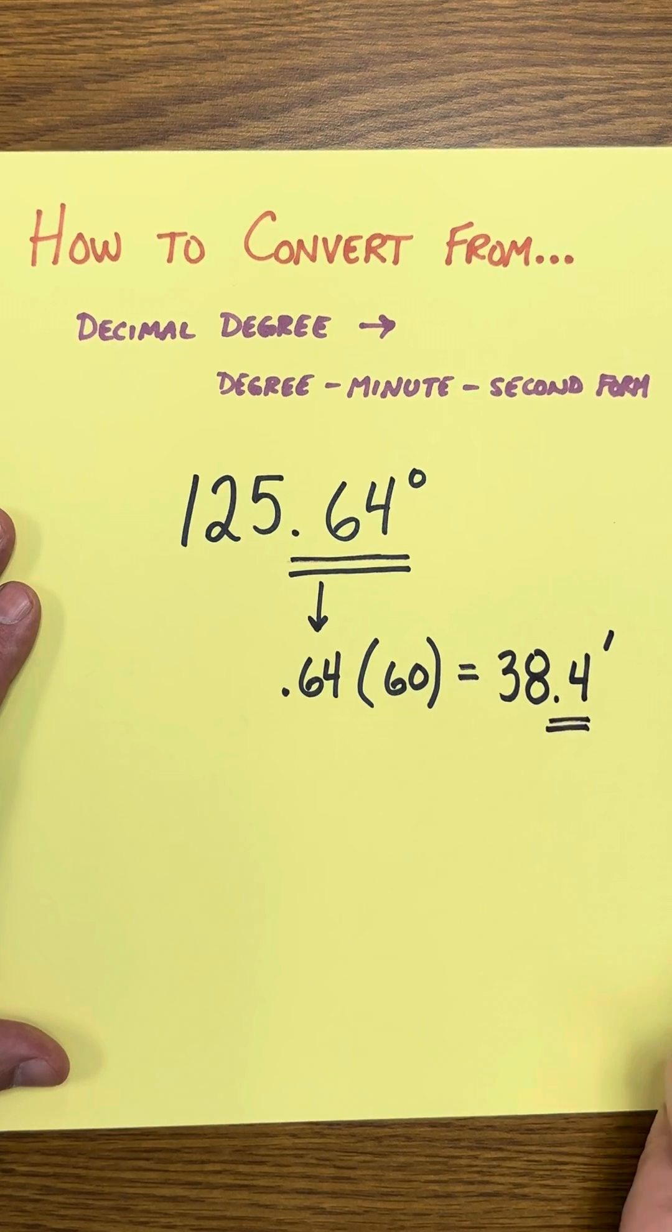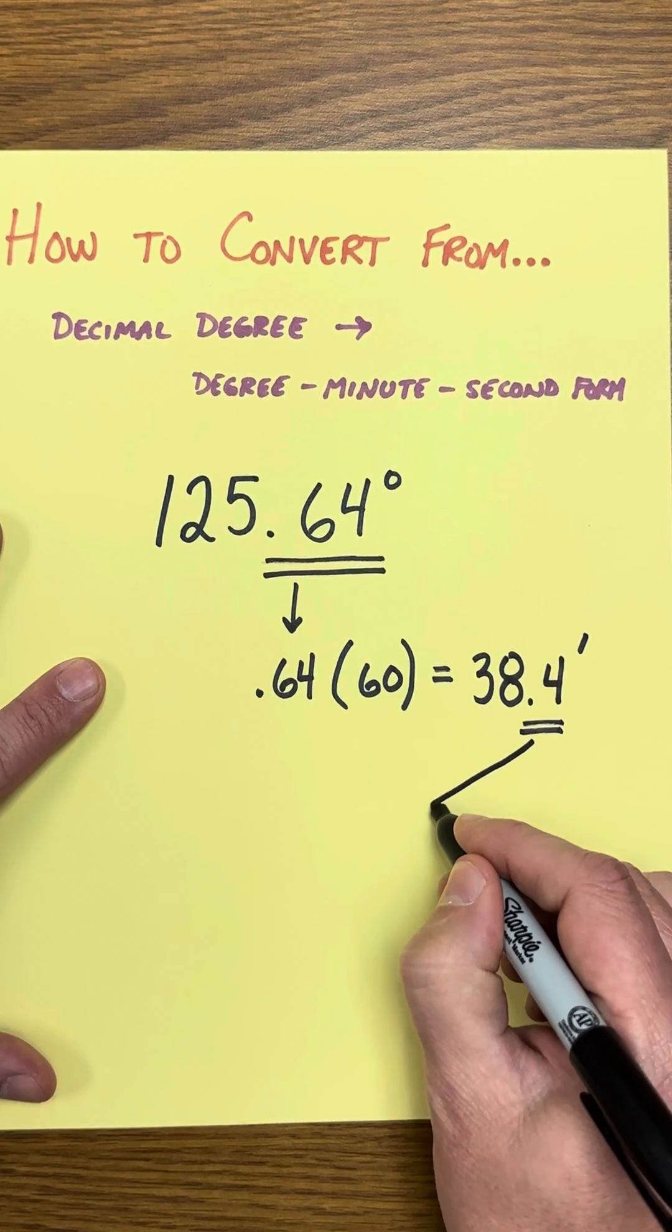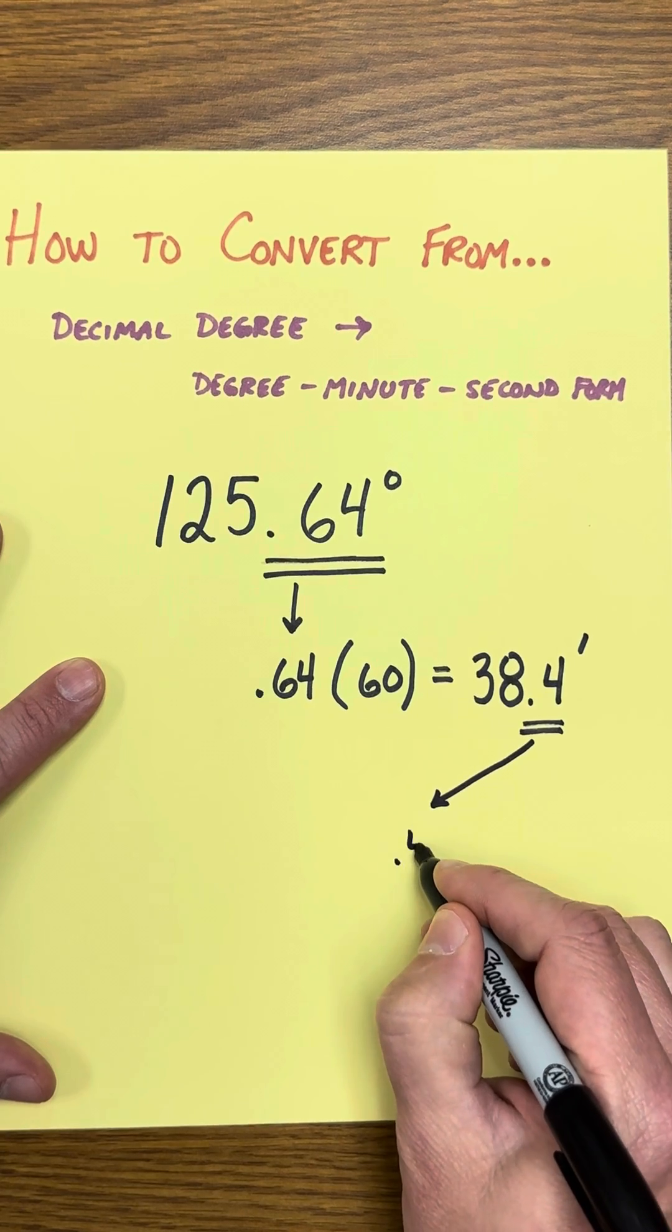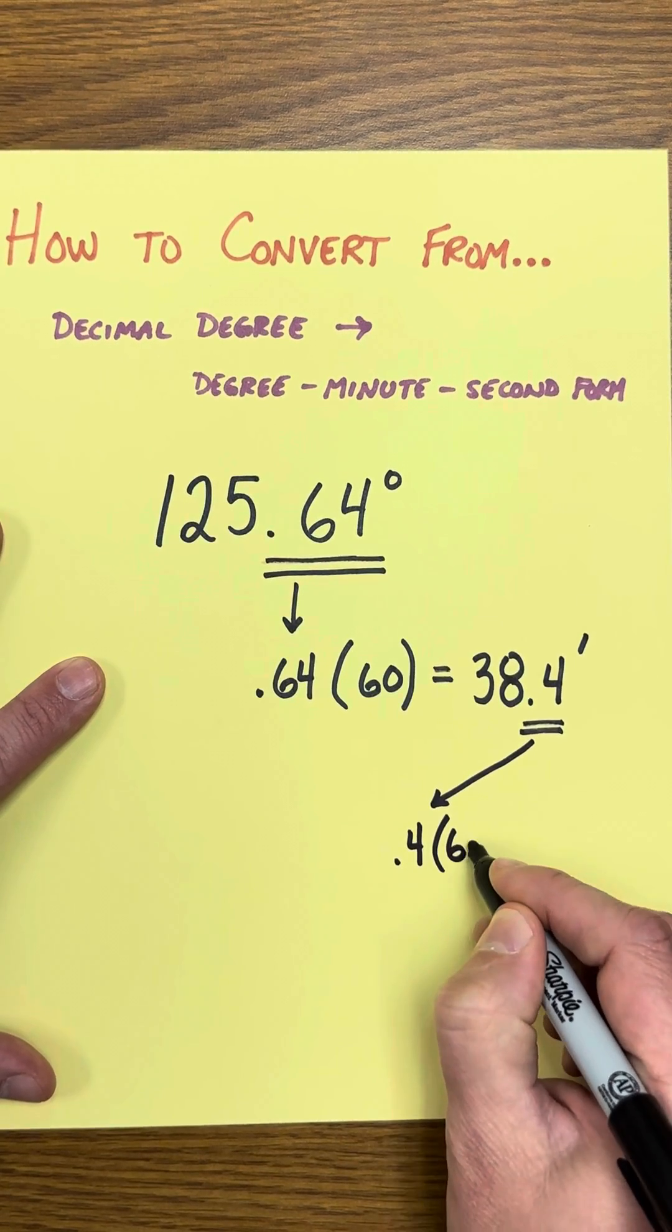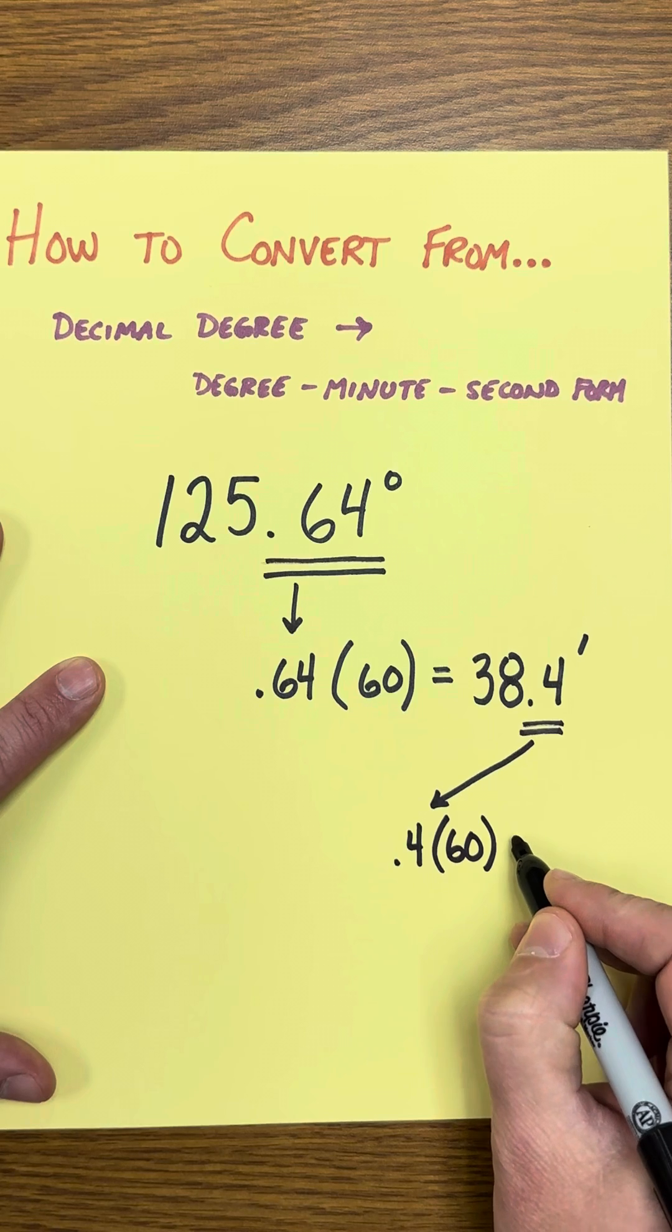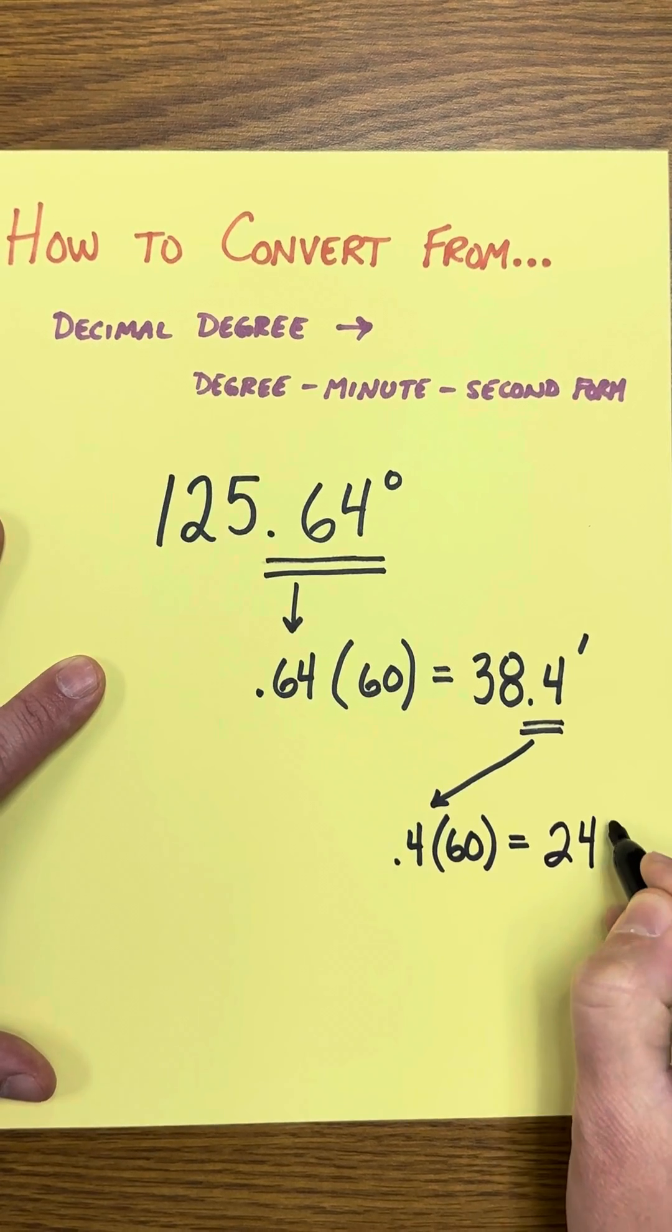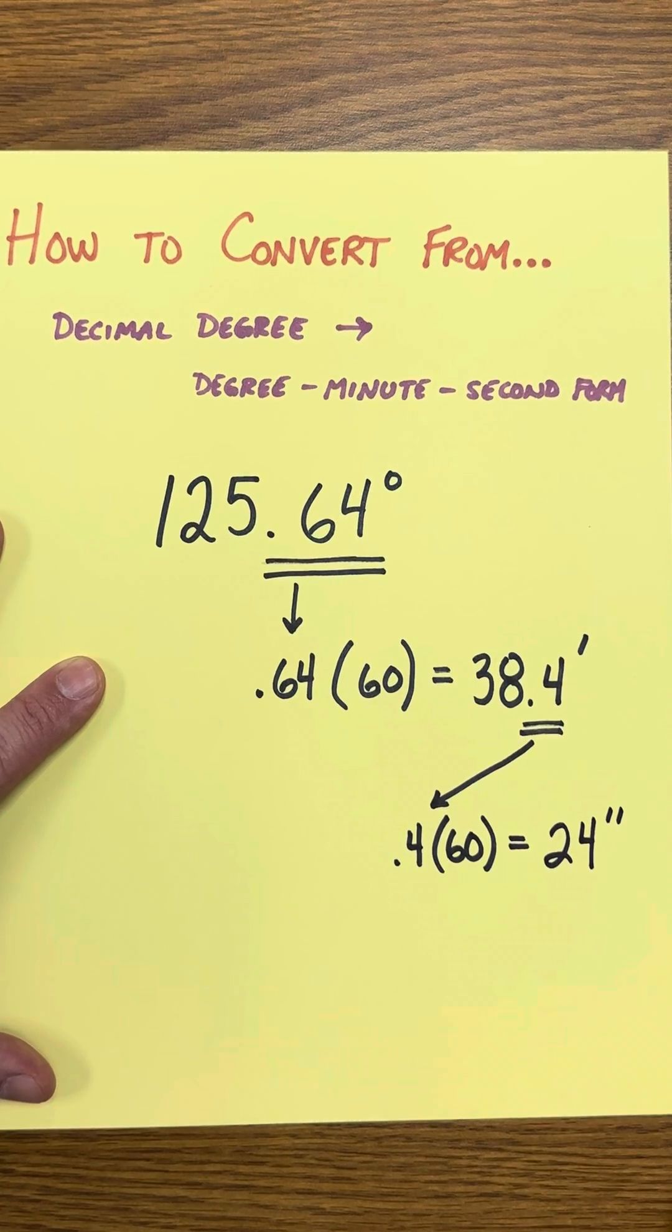So I'm going to convert that 0.4 into seconds. Again, just using the decimal, we're going to take 0.4 times 60 and use your calculator if you need. 0.4 times 60 is 24. That's going to be 24 seconds.